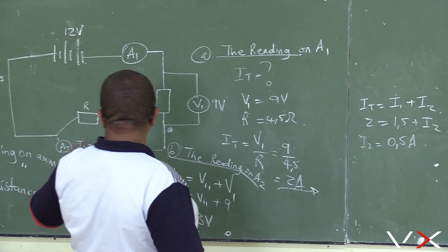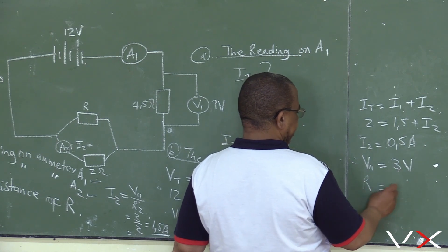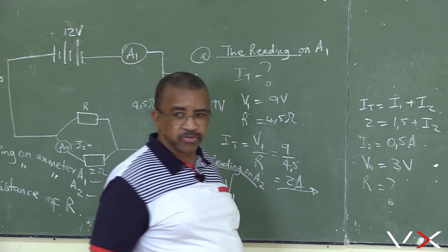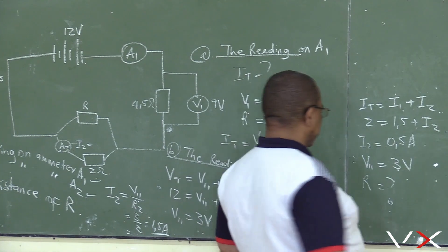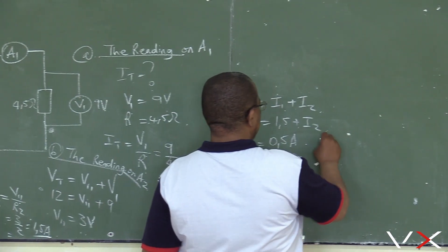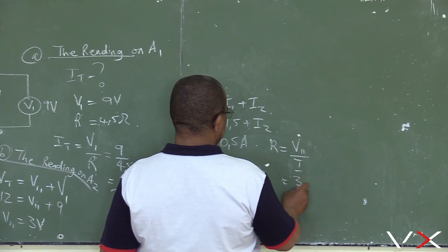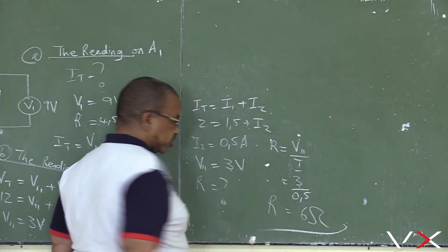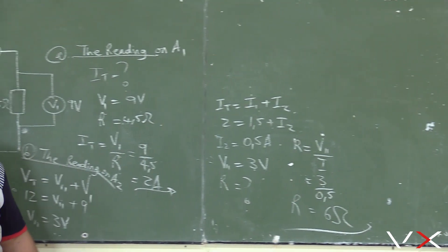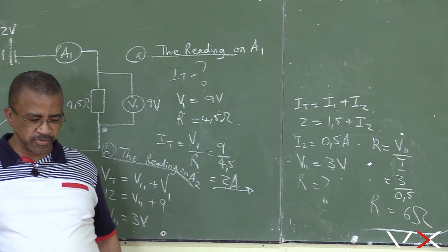Using I total equals I1 plus I2: total current is 2 amps. 2 minus 1.5 gives I2 equals 0.5 amps.